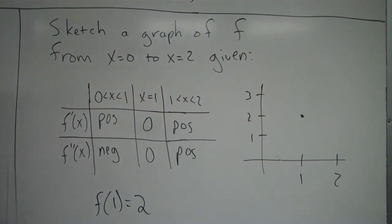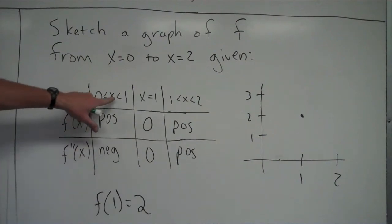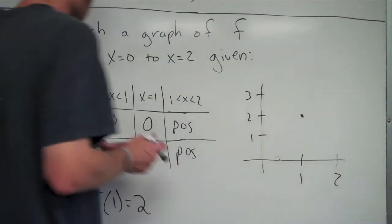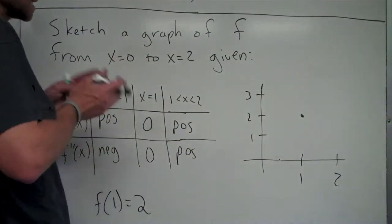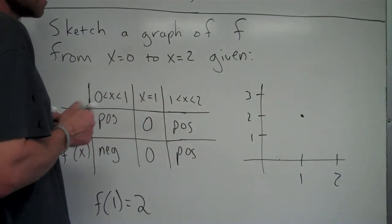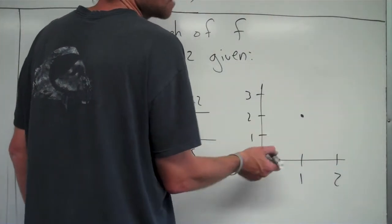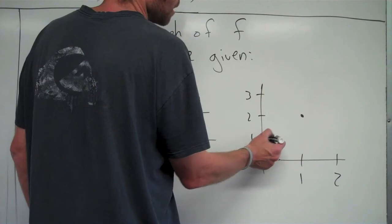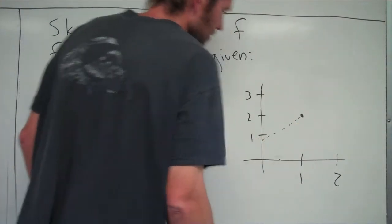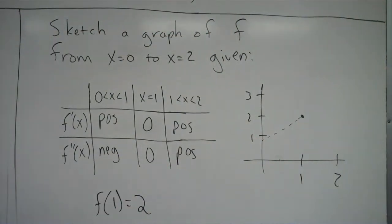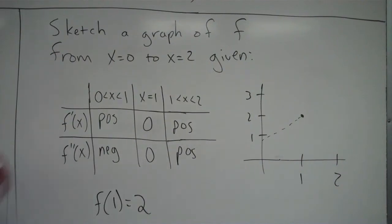So I notice it says that f prime is positive for the x values in between 0 and 1. So in between 0 and 1, my graph is increasing. It has a positive slope since f prime is positive. So I know that for x equals 0, and I don't know where I'm going to start on here, it doesn't matter where you start on here. I'm going to have a positive slope going up to that point right there. The graph of f is increasing since f prime is positive.